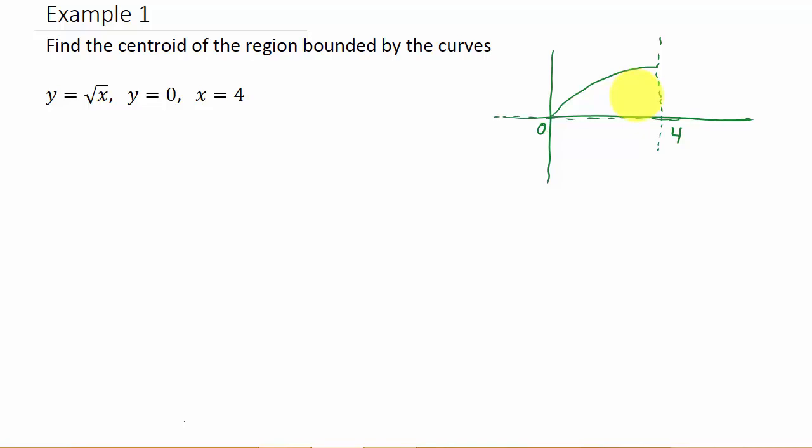Alright, so first thing we have to do is we need to find A. So let's find A first. So the area, well, that's the area under this curve here. So if you remember, the area is the integral from 0 to 4 of the square root of x. And what I'm going to do, instead of writing square root of x, we'll write x to the 1 half, and we're going to integrate from 0 to 4. And so this is x to the 3 halves and then times the 2 thirds from 0 to 4. And I'm not going to show the work here. You should be able to do that. So that's 16 over 3. And you know how to evaluate an integral now.